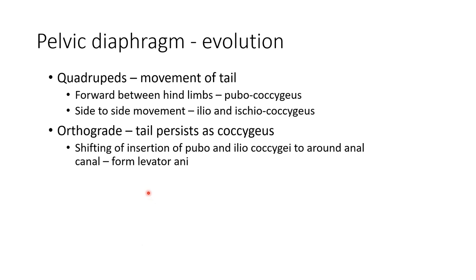Regarding the evolution of the pelvic diaphragm: in quadrupeds it is concerned with tail movement — forward movement between the hind limbs is by the pubococcygeus, and side-to-side movement is by the iliococcygeus. In orthograde animals the tail persists as the coccyx, so the insertion of the pubo- and iliococcygeus shifts to around the anal canal, forming the levator ani muscle.